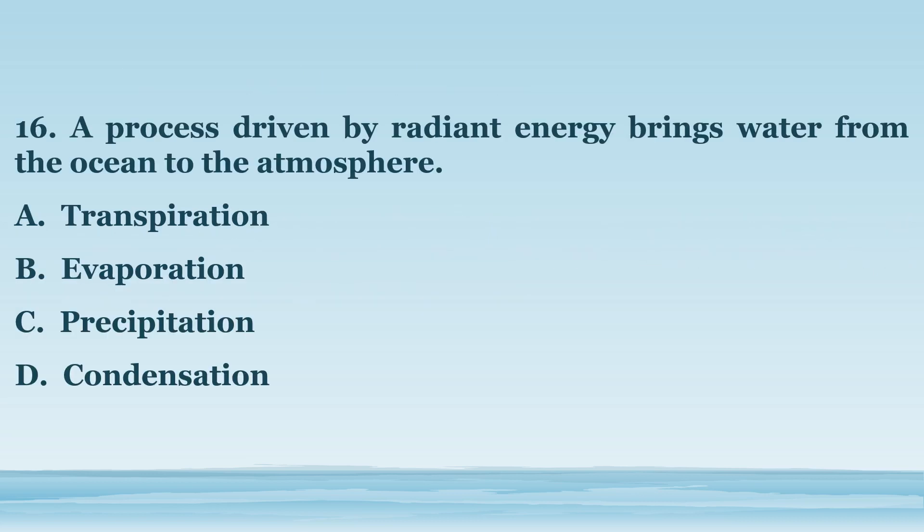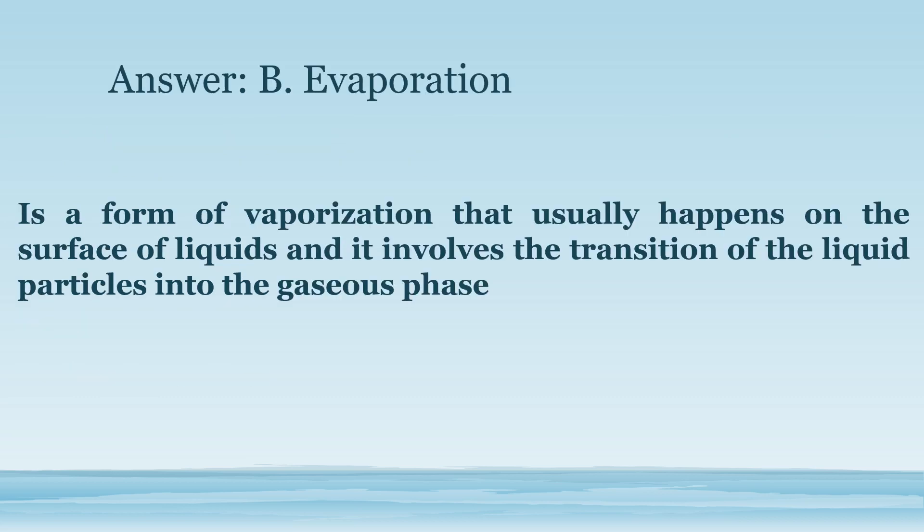Number 16. A process driven by radiant energy that brings water from the ocean to the atmosphere. A. Transpiration. B. Evaporation. C. Precipitation. D. Condensation. The answer is letter B. Evaporation. Is a form of vaporization that usually happens on the surface of liquids and involves the transition of the liquid particles into the gaseous phase.